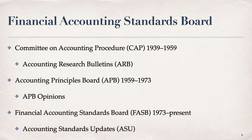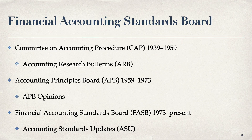There have been three organizations that set accounting standards in the United States — the FASB is the third. The first was the Committee on Accounting Procedure, which lasted 20 years from 1939 to 1959 and issued Accounting Research Bulletins, or ARBs. It was replaced by the Accounting Principles Board from 1959 to 1973, which issued APB opinions. Currently we have the Financial Accounting Standards Board, FASB, from 1973 to the present. They now issue Accounting Standards Updates, which update the codification.